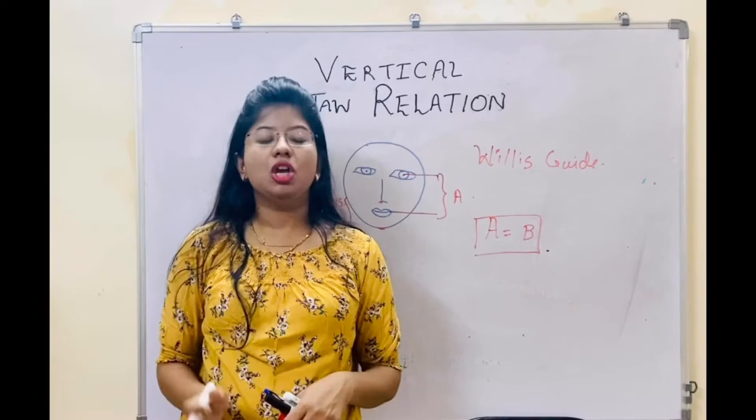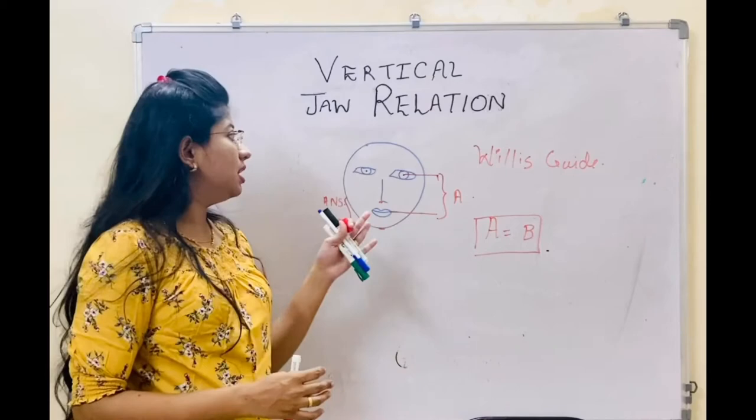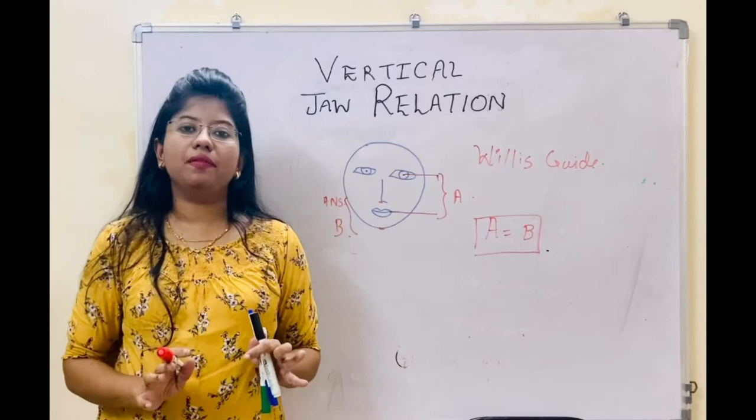So what we have covered about facial measurements includes: swallowing, tactile sensation, speech, facial expressions, and the important one — anatomical landmarks — which includes the Willis's guide. With these methods we can record the vertical dimension at rest.